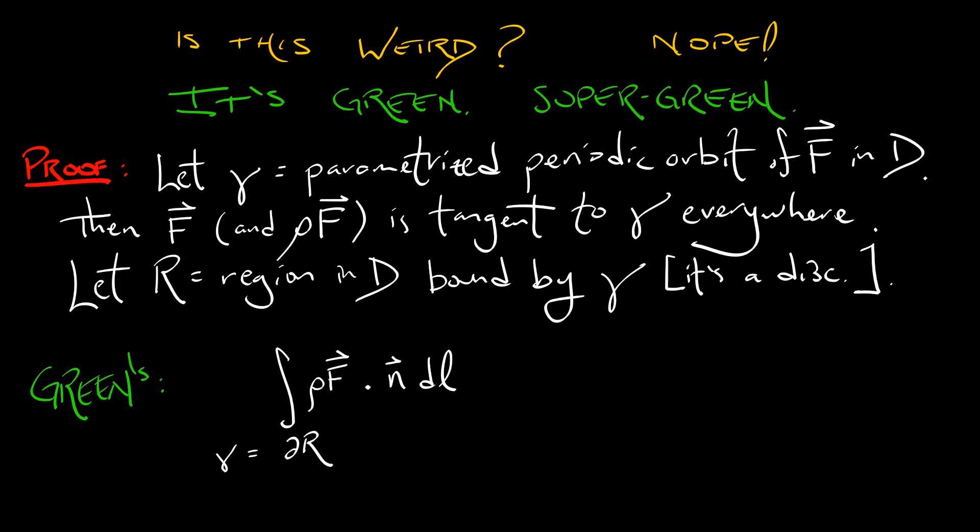because gamma is the boundary of this region r, this line integral, this flux, is equal to the double integral over the interior of r of the divergence of the vector field rho times f with respect to area.